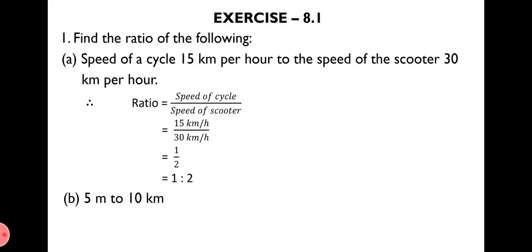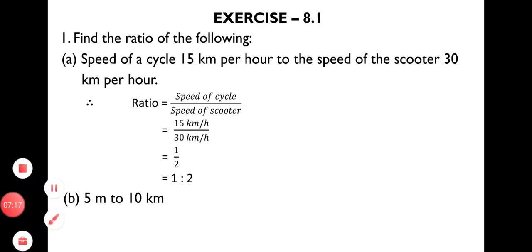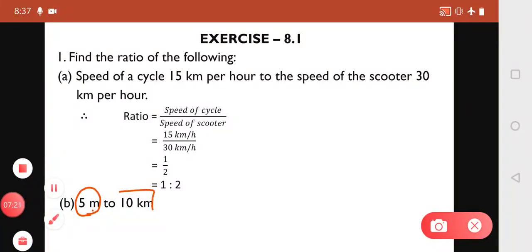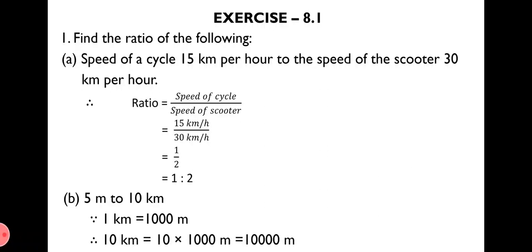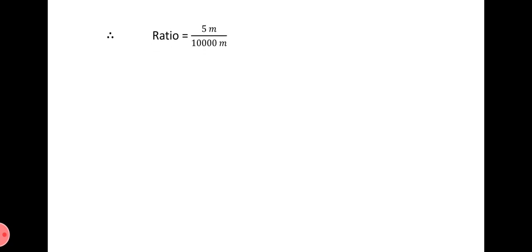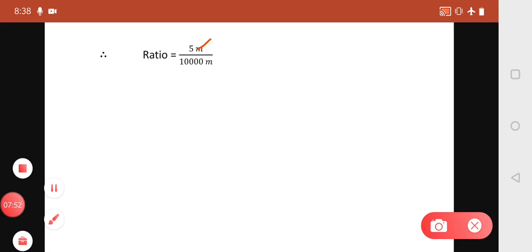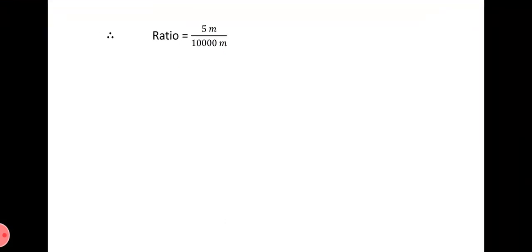Question 1B: 5 metres to 10 km. One number is in metres and another is in kilometres. We convert km to metres: 1 km = 1000 m, so 10 km = 10,000 m. Therefore ratio = 5 m ÷ 10,000 m = 1/2000, that is 1:2000.